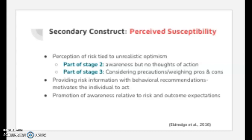The second construct of the PMPM is perceived susceptibility, which has to do with the perception of risk and ties into realistic optimism. Perceived susceptibility ties into stage 2, aware but not thinking to act, and stage 3, weighing pros and cons and considering precautions. The individual is thinking about change, and susceptibility to risk is formed by communication with others and personal experience with the hazard. Risk information shows promise in combination with behavior recommendations to motivate the individual to act and acquire the skills to do so, further encouraging awareness related to risk and outcome expectation.